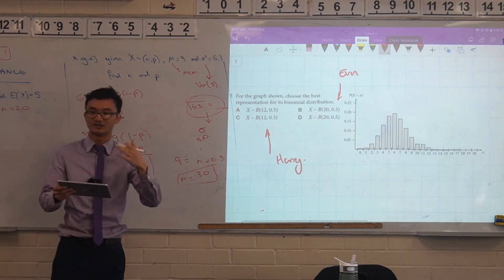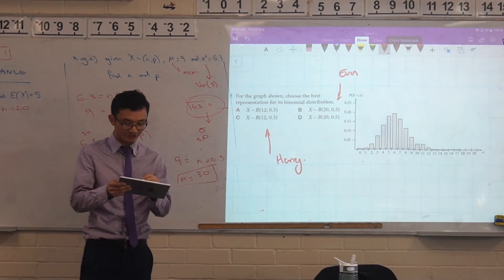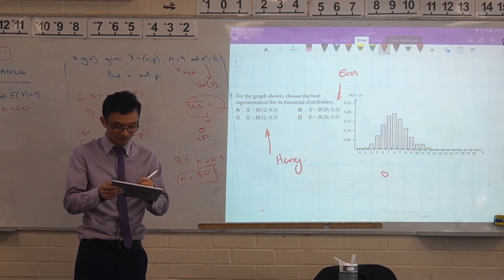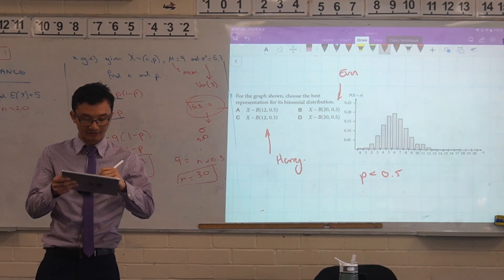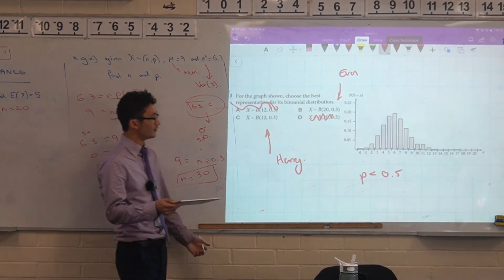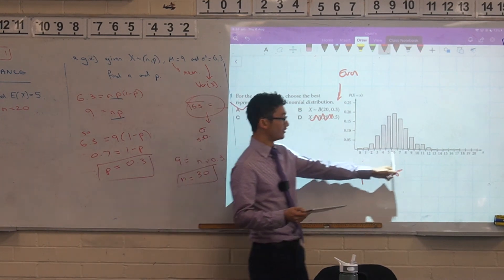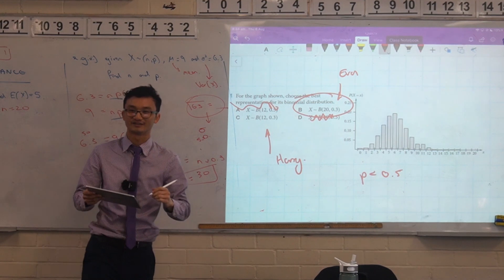So that immediately brings my attention to okay it must be skewed. How is it going to be skewed? Well, there's less chances of success. So P needs to be less than 0.5. So I can really immediately rule out this one and this one, right? And then I know the number of trials. So I know it has to be B. So, well done, Eva. Good stuff.